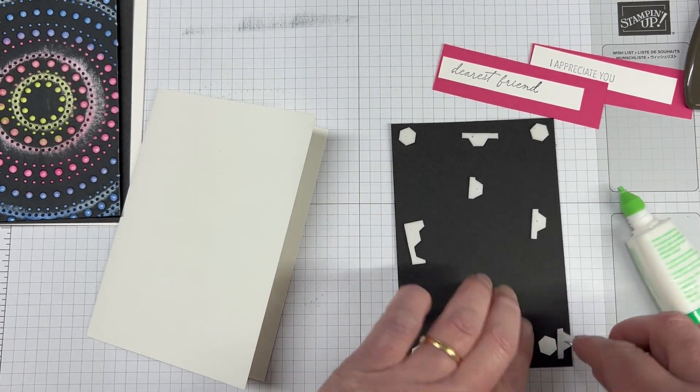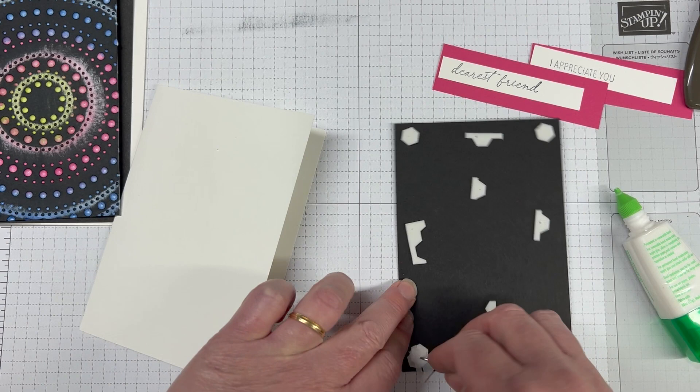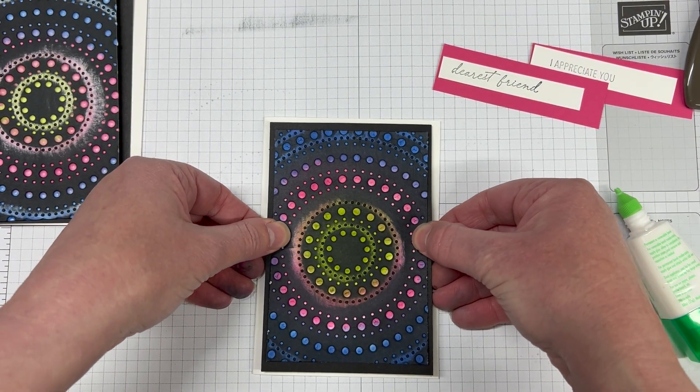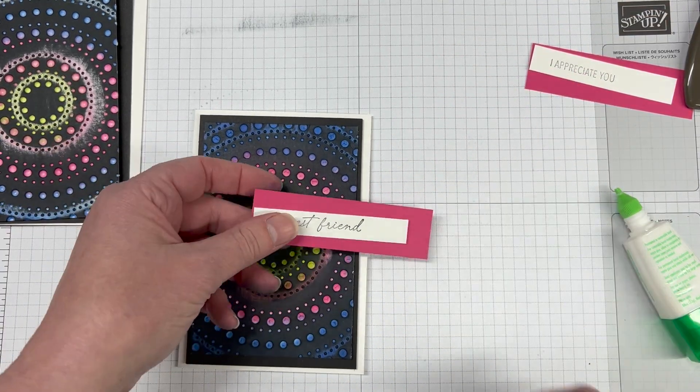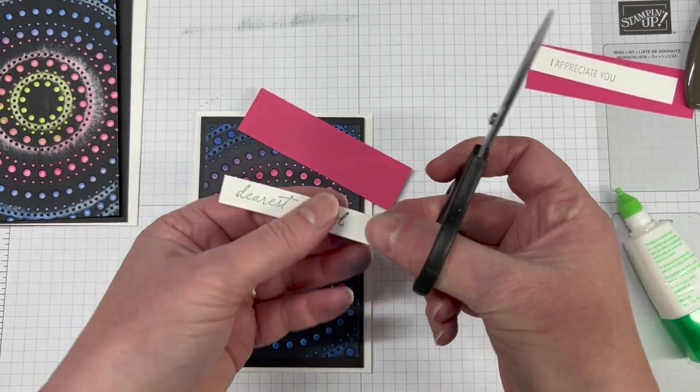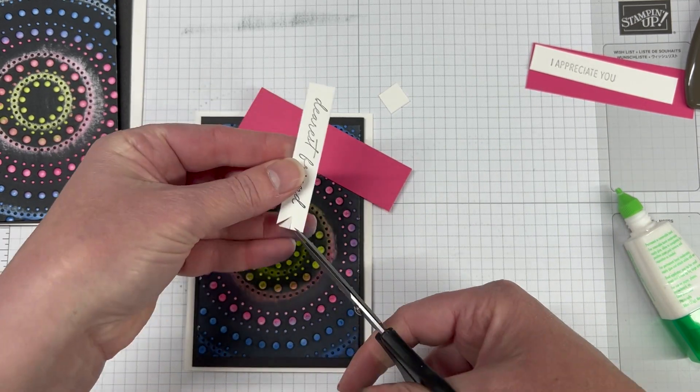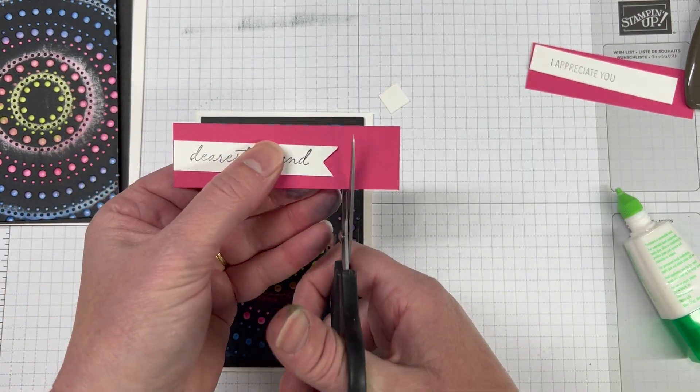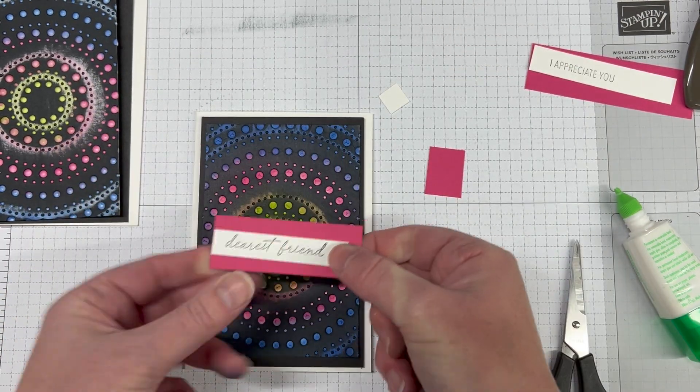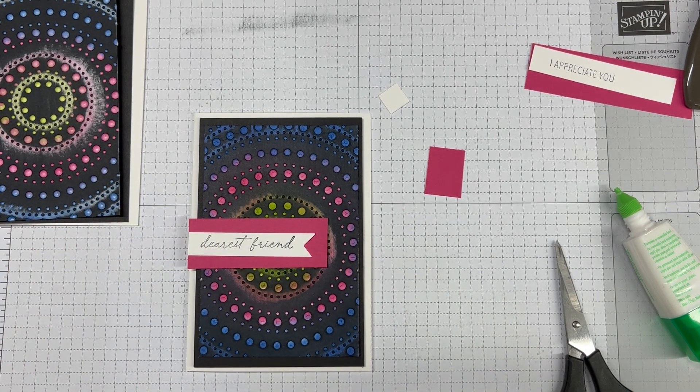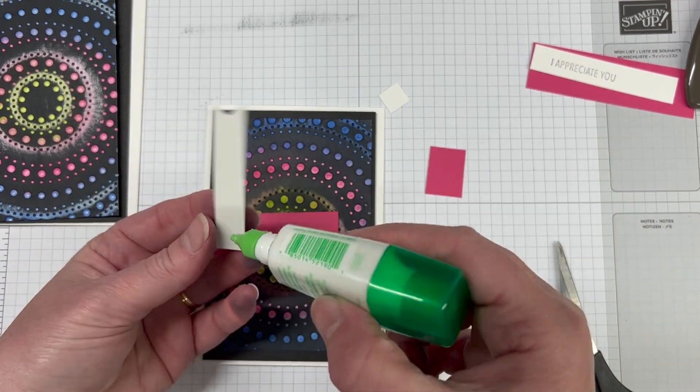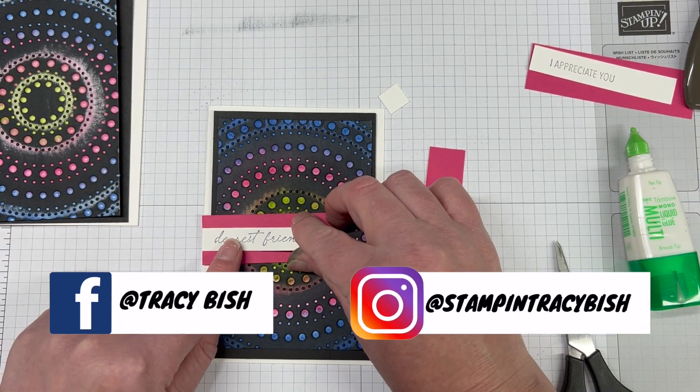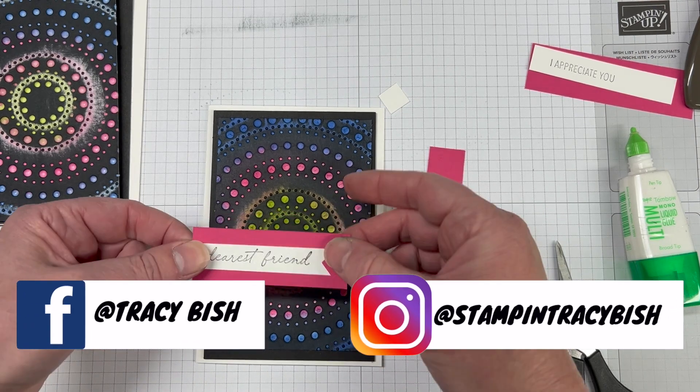We're going to pop this one up with some dimensionals. I did use liquid glue to adhere the two Joseph's coat pieces as well as down to the basic black. For our sentiment piece, I'm going to cut down. For one of the sentiments, I cut down both pieces, both the matting as well as the sentiment piece. For the other one, the dearest friend, I've just cut down the sentiment piece and left the matting in a big rectangle.